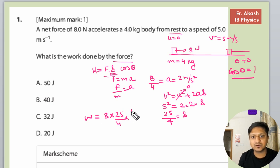The direction and the movement is in the same direction, so theta is 0 and cos 0 equals 1. So 8 and 25 into 2 is 50.